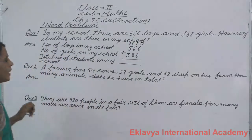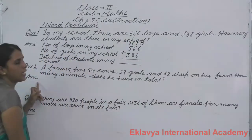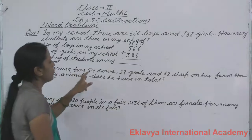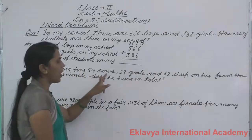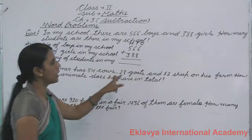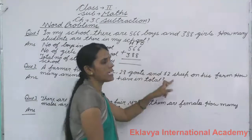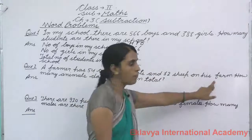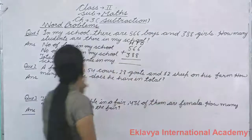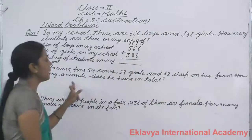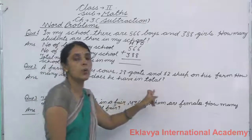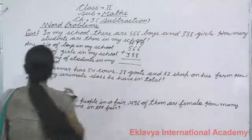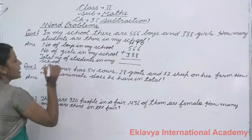We will take the second question. A farmer has 54 cows, 28 goats and 12 sheep on his farm. How many animals does he have in total? First of all we will make a statement.